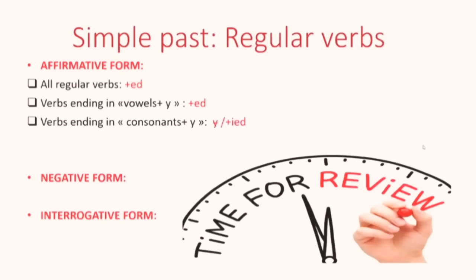What are the next verbs? Verbs ending in consonants plus y. Remember, we omit the y and then we add ied. Now the next are the verbs ending in a vowel plus consonant, like stop. Remember, stopped. We double the consonant and then we add ed.